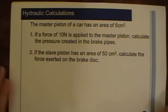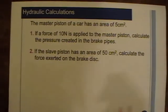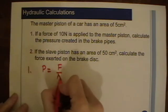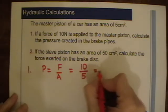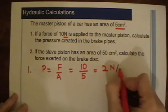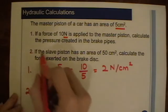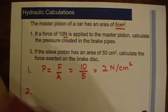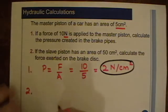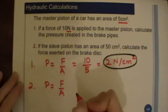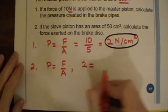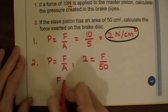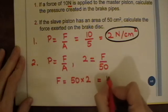For a worked calculation: the master piston of a car has an area of 5 cm². A force of 10 N is applied, so pressure equals force over area: 10 divided by 5 equals 2 newtons per cm². For part 2, the slave piston has an area of 50 cm². Since the same pressure of 2 N/cm² is transmitted throughout, force equals pressure times area: 2 times 50 equals 100 newtons.